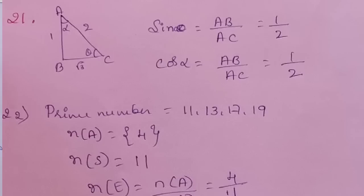Question 21: in the given figure, if angle ABC = 90°, find the value of sin θ and cos α. sin θ = AB/AC = 1/2 and cos α = AB/AC = 1/2.